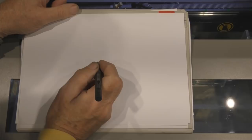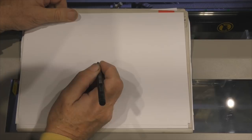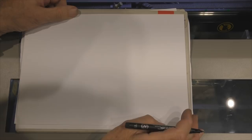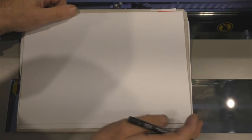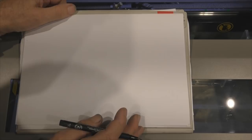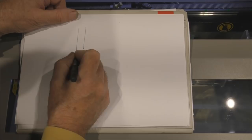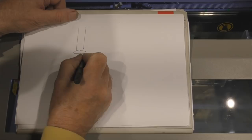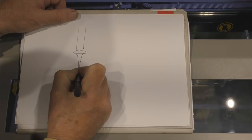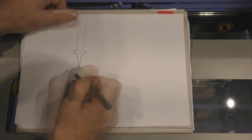Before we start engraving on glass, there are a couple of things that you really need to understand. First of all, glass does not cut and it does not burn, but we can etch it. That's because of some interesting mechanical phenomena that happens when you fire infrared energy at a glass surface. The laser beam either being absorbed by or being reflected by the surface that it hits.